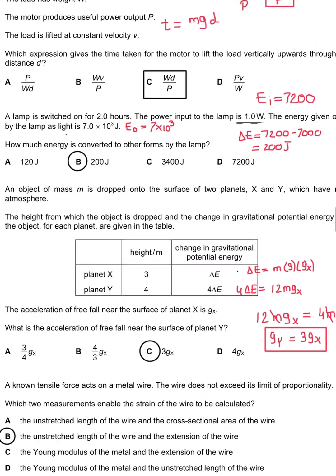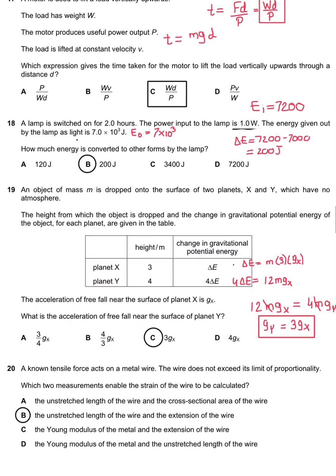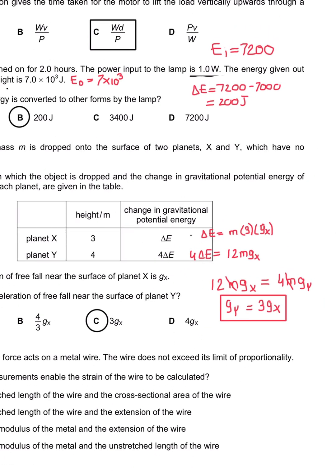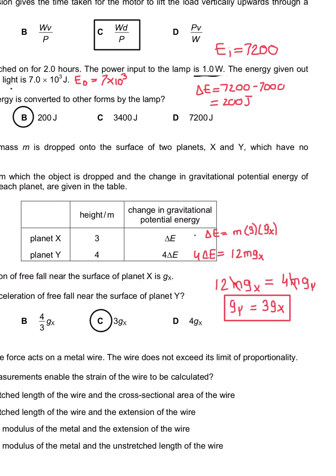Question 19: An object of mass m is dropped onto surfaces which have no atmosphere. The height from which the object is dropped and change in gravitational potential energy for each planet is given. What is the acceleration of free fall near the surface of Y? The acceleration near the surface of planet X is gX. Change in E is mgh, so m gX times 3, and that is 4 times ΔE, meaning 12 m gX. Equaling them, 12 m gX equals 4 m gY because the height is 4. So you can find gY as 3 gX. C is the appropriate answer.